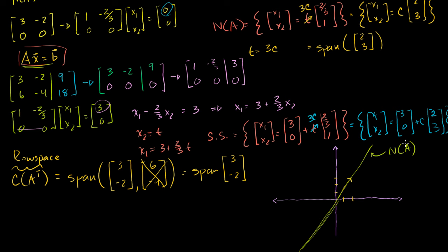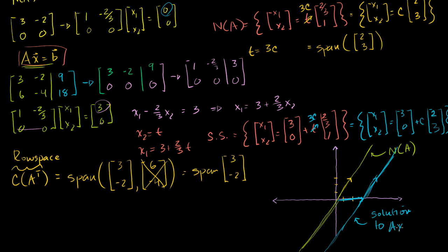The solution set includes the vector 3, 0 — going out to 3 on the horizontal axis. Plus we add members of the null space: any multiple of 2, 3. When you add all the different multiples of 2, 3 to the vector 3, 0, you get a line shifted by that vector 3, 0. That line right there is the solution set — the solution to Ax equals b.